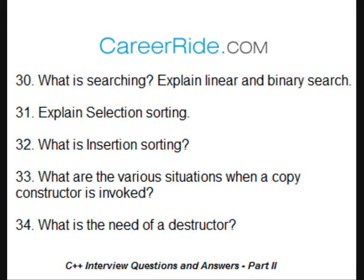Explain selection sorting. In selection sorting, one has to perform n-1 iterations to sort a linear array containing n elements. In the first iteration, we select the first minimum value and interchange it with the element present at the first position. In the second iteration, we select the second minimum value and interchange it with the element at the second position, and so on.